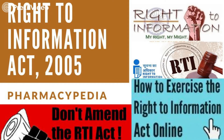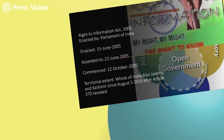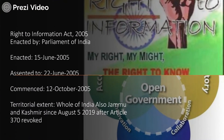The Right to Information Act was enacted on 15th June 2005 and commenced from 12th October 2005. Recently, in July 2019, an amendment to this act was also passed. I will share the different aspects and perspectives of the RTI Act 2005 and what changes took place in the amendment act 2019.